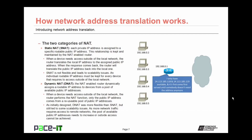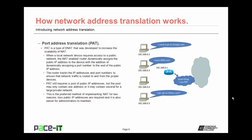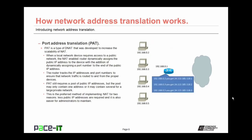The solution is called port address translation — or in Cisco terms, NAT with PAT. PAT is a type of dynamic NAT developed to increase the scalability of network address translation. When a local network device requires access to a public network, the NAT-enabled router dynamically assigns the public IP address to the device, with the addition of dynamically assigning a port number to the end of the public IP address. The router tracks IP addresses and port numbers to ensure that network traffic is routed to and from the proper devices.